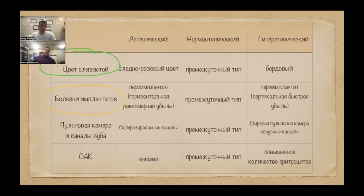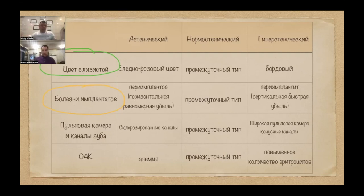We have seen that there are not only conditions of the body but also many consequences. Therapists know that if they work in channels, then there are asthenic patients of the skin which are very difficult to treat, and there are hypersthenic patients — there is a correlation.